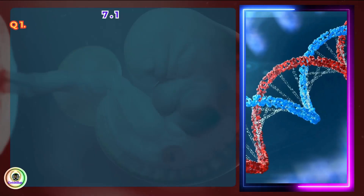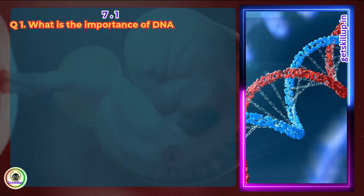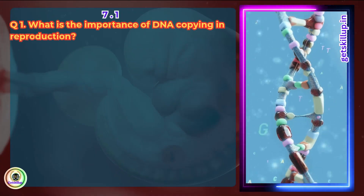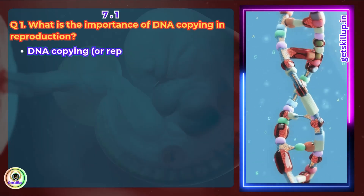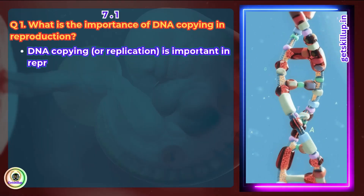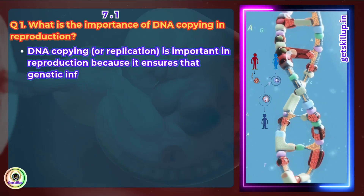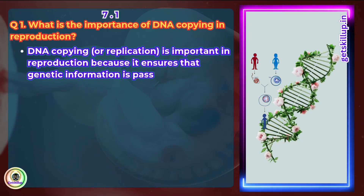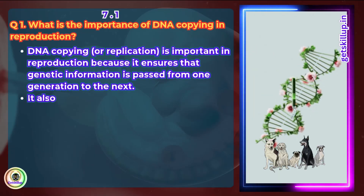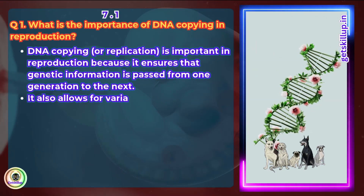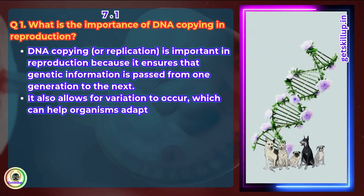Question 1: What is the importance of DNA copying in reproduction? DNA copying or replication is important in reproduction because it ensures that genetic information is passed from one generation to the next. It also allows for variation to occur, which can help organisms adapt to changing environments.